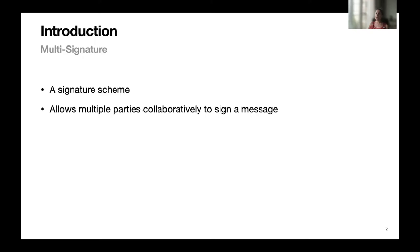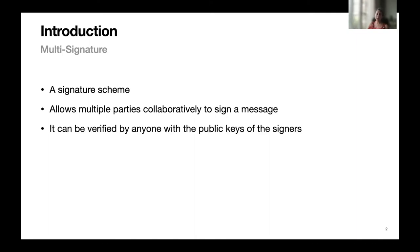A multi-signature protocol is a signature scheme where multiple parties collaboratively sign a message, and it can be verified by anyone who has the public keys of the signers. It consists of the following algorithms. The first is the key generation algorithm, which outputs the secret and public key pair for a signer.